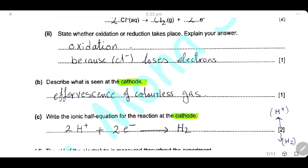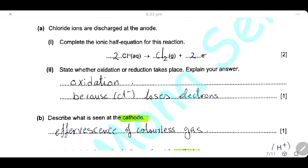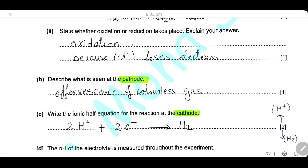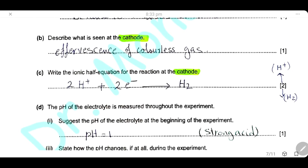At the cathode, the negative electrode, protons are discharged. What is seen at the cathode is effervescence of a colorless gas, which is hydrogen. The ionic half equation for the cathode reaction: each two protons accept two electrons to form one molecule of hydrogen: 2H⁺ + 2e⁻ → H₂. This is worth two marks: one for the correct ion and charge, one for the correct formula H₂.